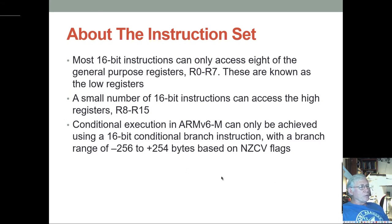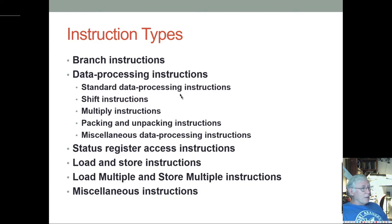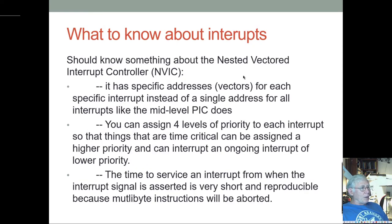Most 16-bit instructions can only access the low registers R0 through R7; a small number of 16-bit instructions can access the high registers. For conditional branches, you only get a range of plus or minus 256 bytes (plus 254). There are various instruction types — loads and stores for memory reads and writes, standard data processing instructions like ANDs, ORs, shifts, rotates, hardware multiply, and packing/unpacking instructions.